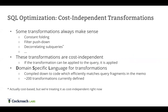Cost-independent transformations are always applied because they always improve the query. Examples include folding constants (so a constant expression isn't recomputed per row), pushing down filters, and decorrelating subqueries. CockroachDB developed a domain-specific language (DSL) for defining these transformations; the DSL is compiled down to code that efficiently matches fragments of the query in the memo and performs the transformation. Currently there are over 200 transformations defined in the system.